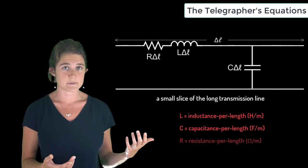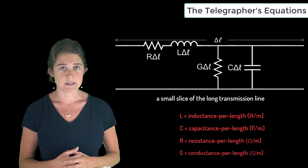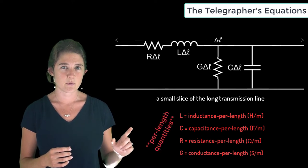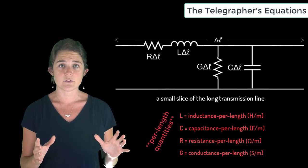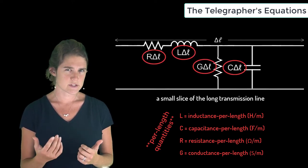It may also have losses, which we will model as a series resistance per length R and a shunt conductance per length G. Note that since we've defined these as per-length quantities, the total value of each is obtained by multiplying by Δℓ.